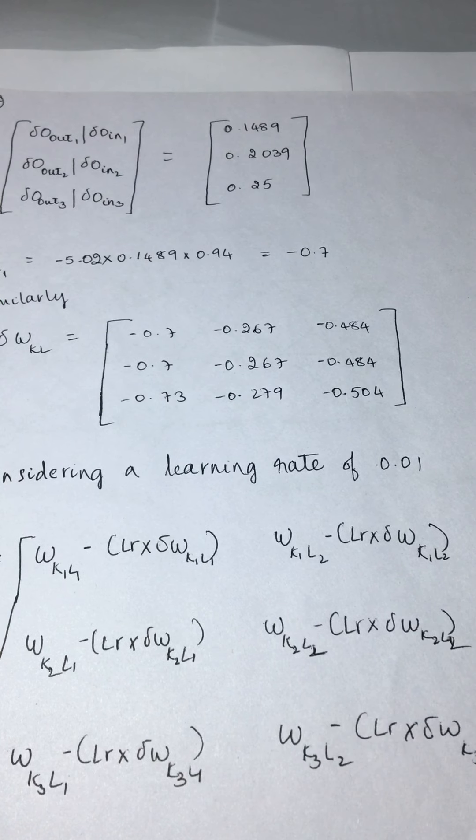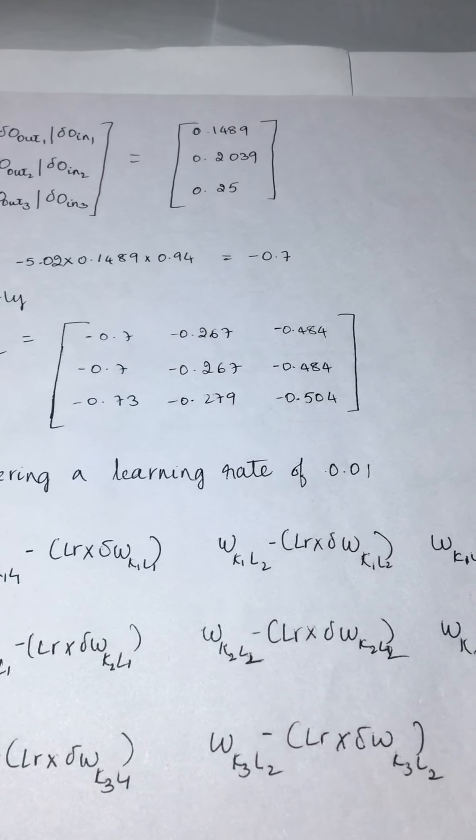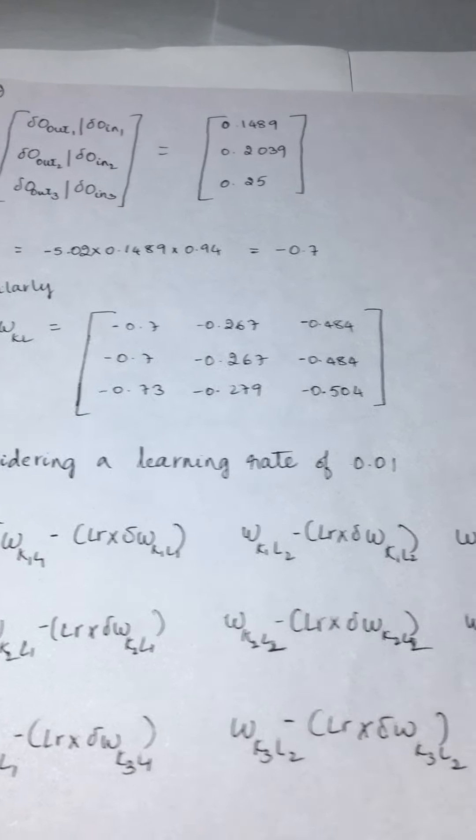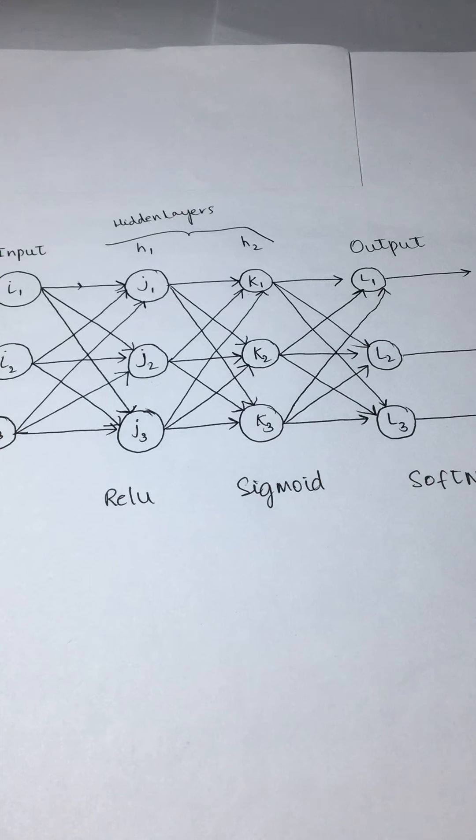For K1 L1 you're calculating the updates of your weights, K1 L2 you're calculating the updates, K1 L3 similarly, and so on: K2 L1, K2 L2, K2 L3. This is one updation calculation.